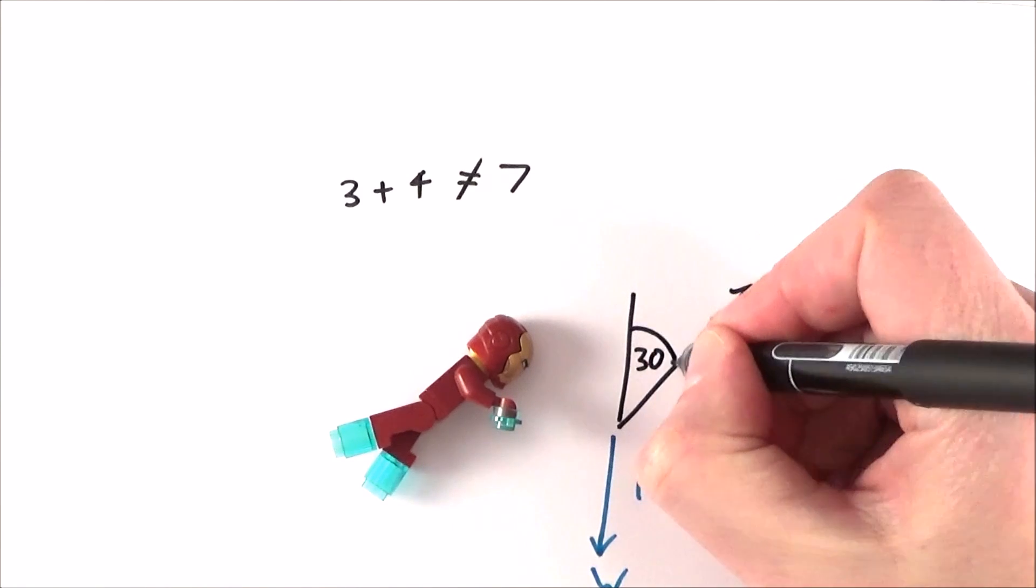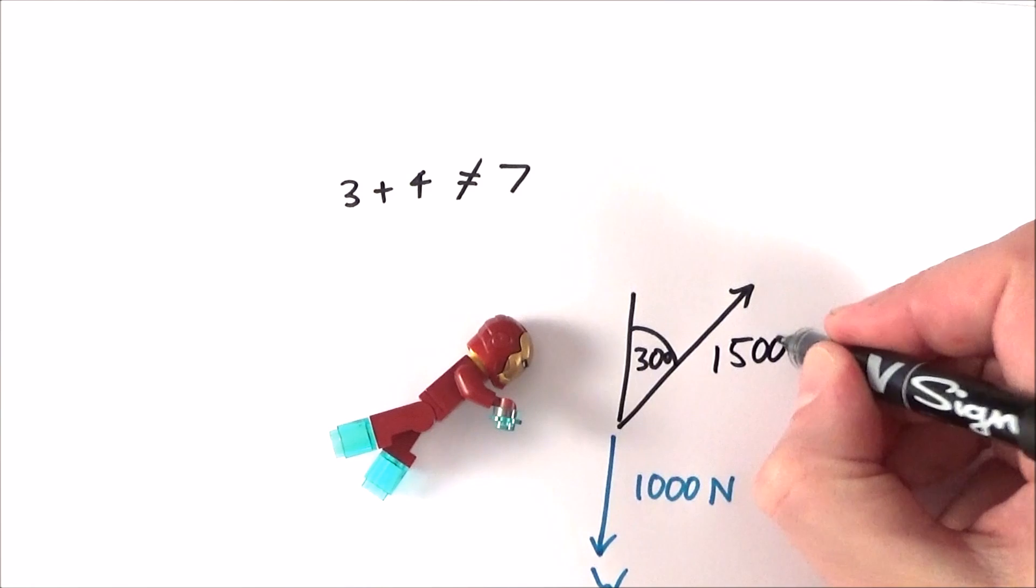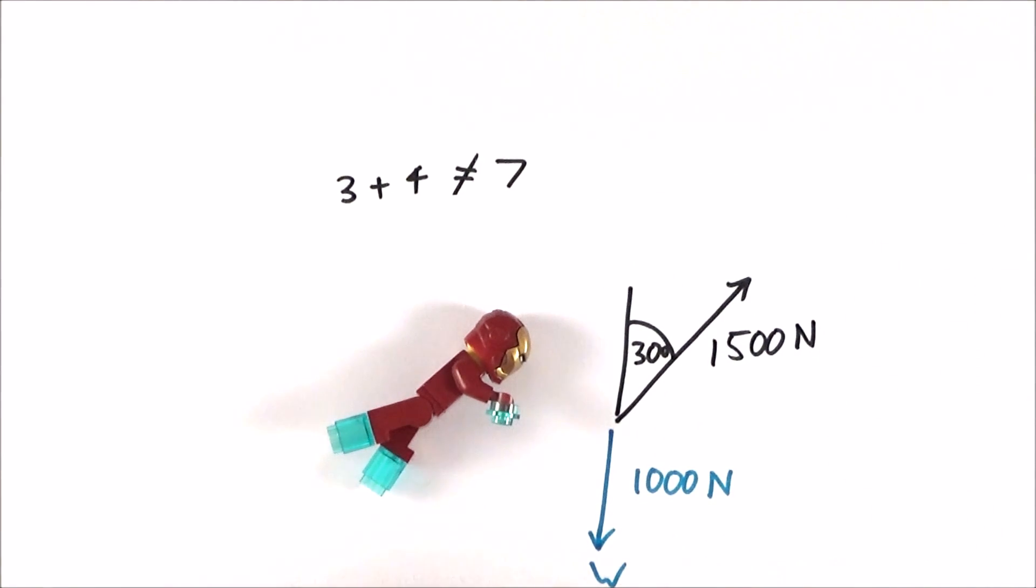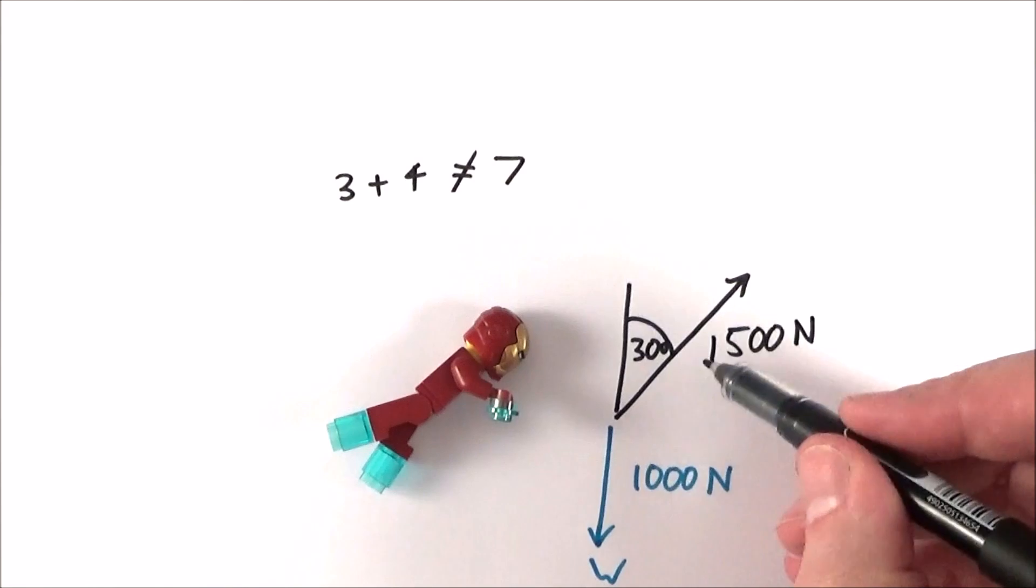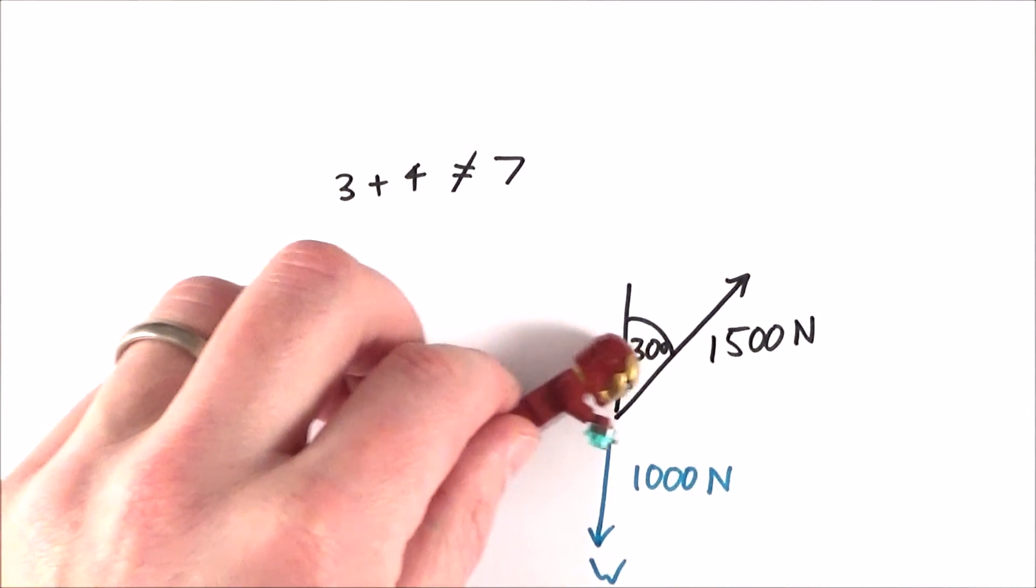From the vertical and maybe has a force of 1500 newtons. What we want to do is maybe find the result of this force and this force on Iron Man, and if we do that we know then maybe which direction they're going to move in.